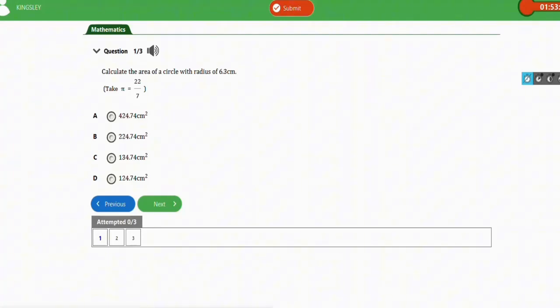The first one we have here says calculate the area of a circle with radius of 6.3 cm. All right, so let's bring out the parameters. In the question we have r, which is our radius, to be 6.3 cm.